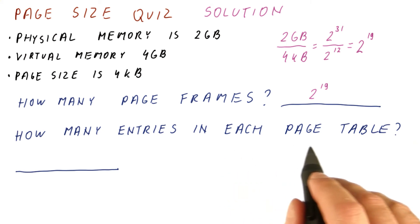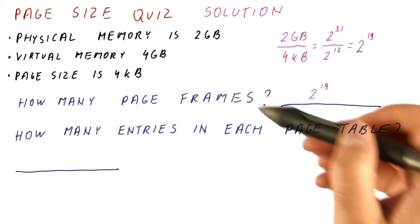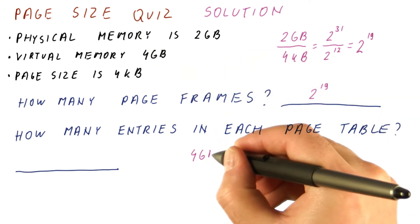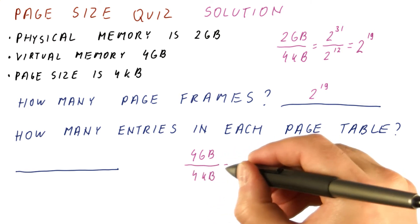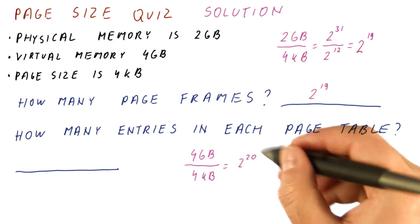How many entries do we have in each page table? We need one entry in a page table for each page in the virtual memory. So the answer here is four gigabytes divided by four kilobytes. And that is two to the 20th, or one mega entry as they would say.